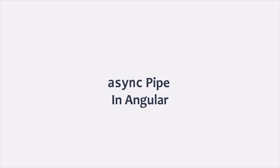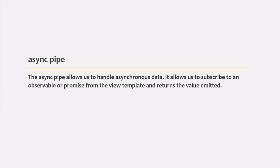In the very beginning of this section we learned about some of the built-in pipes of Angular and their use. There is one more very important built-in pipe of Angular which we have not talked about yet, and that is the async pipe. In this lecture we are going to learn what the async pipe is, when we use it, and what it actually does. The async pipe basically allows us to handle asynchronous data — it allows us to subscribe to an observable or promise from the view template and returns the emitted value.